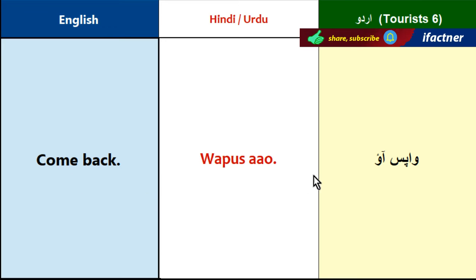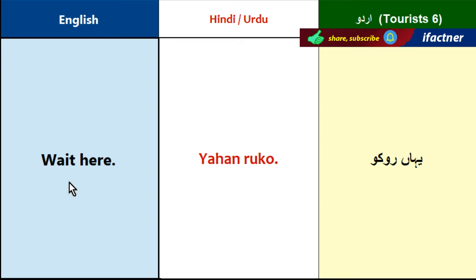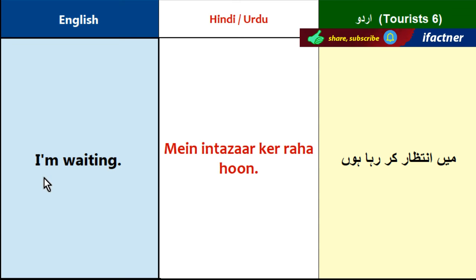Wait here: Yahaan Ruko. Yahaan means here, Ruko means stop/wait. I am waiting: Main Intazaar Kerr raha hoon. Main means I, Intazaar means wait, Kerr raha hoon is the present continuous form meaning am doing.